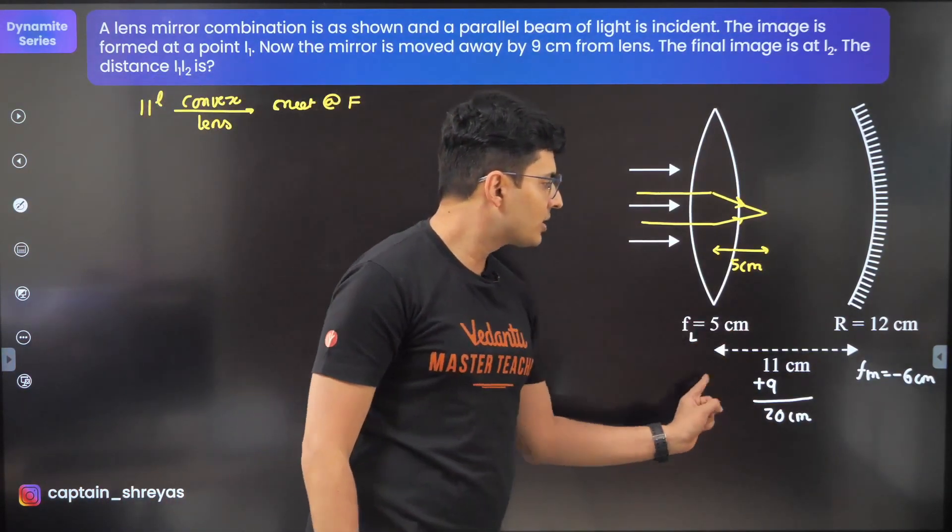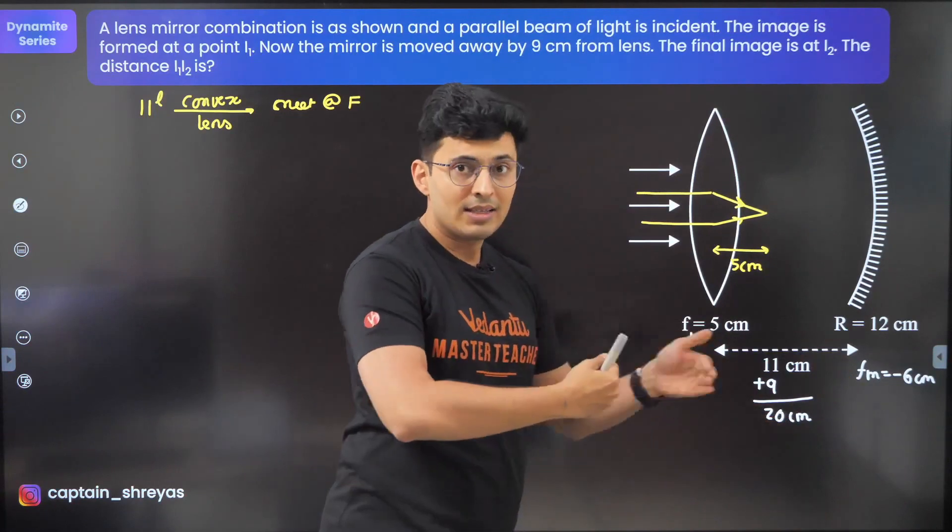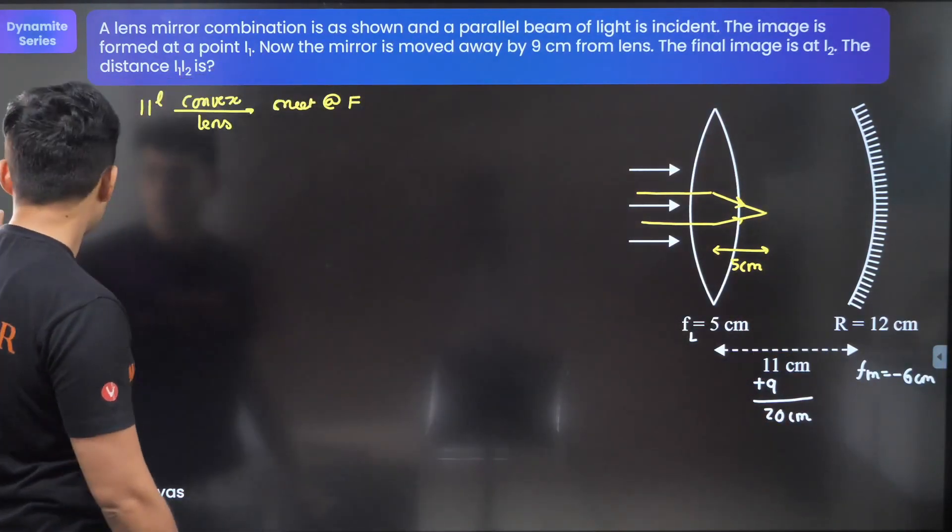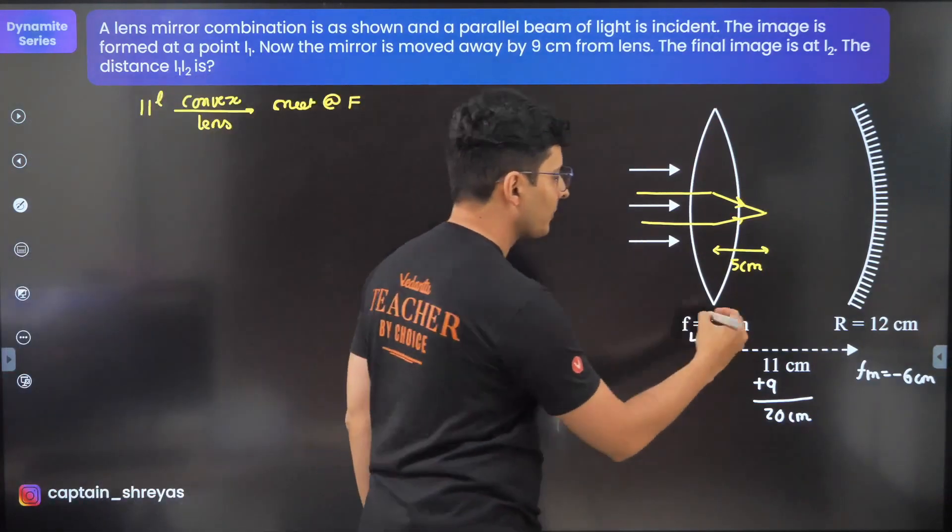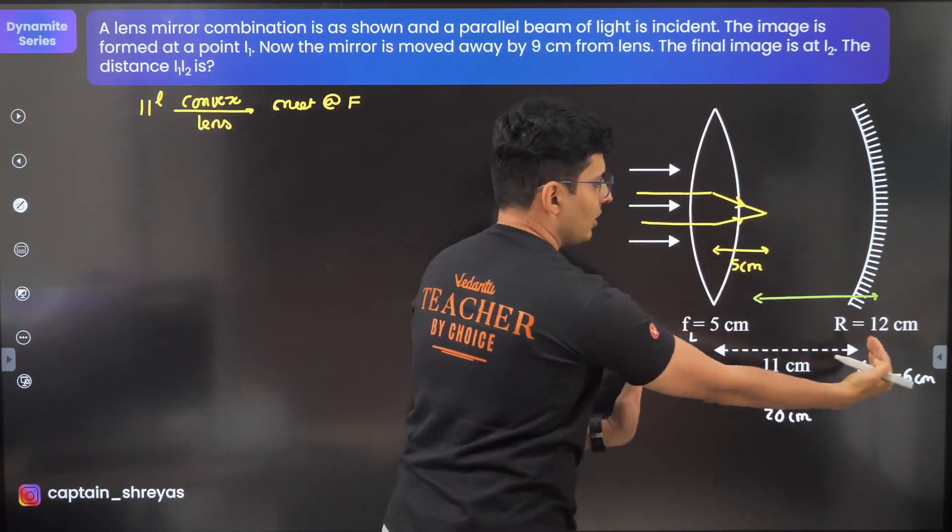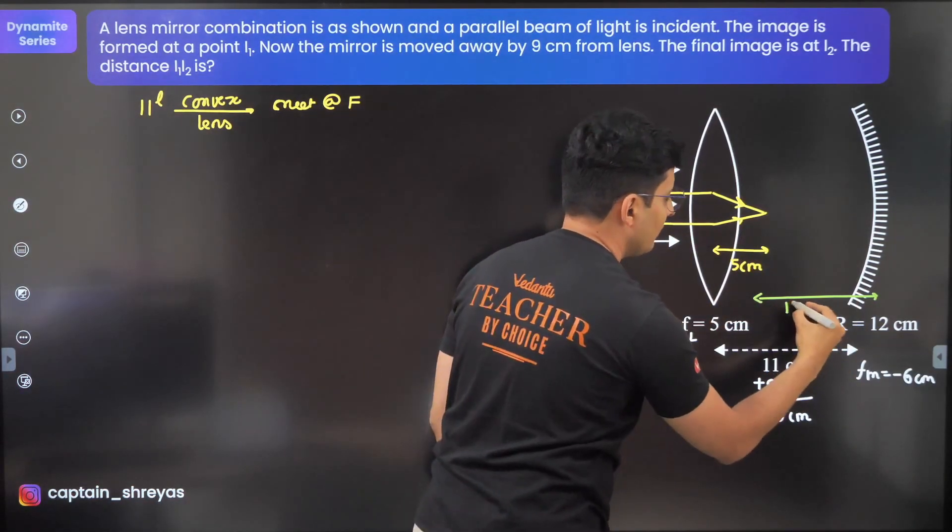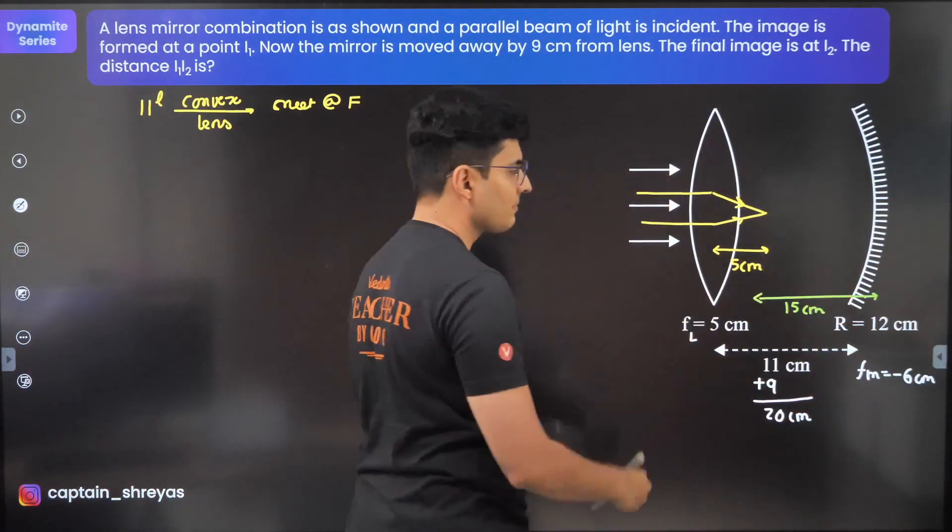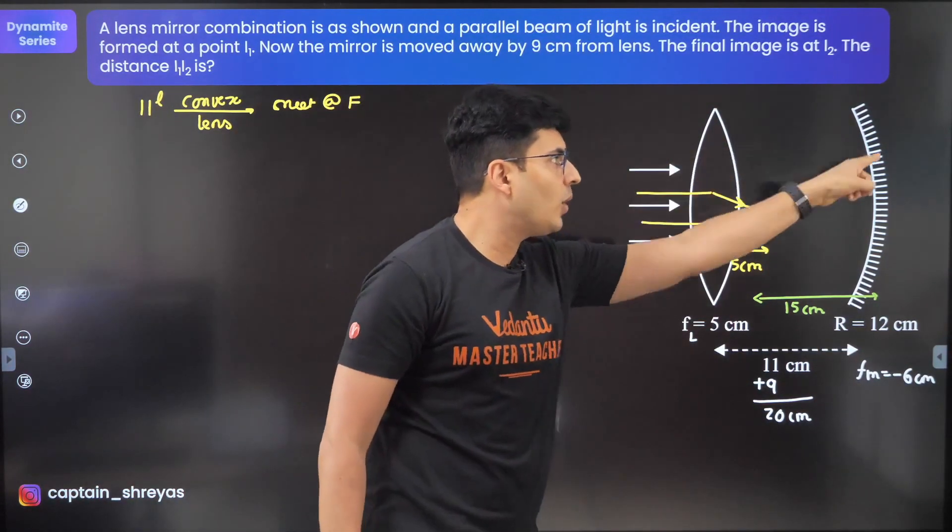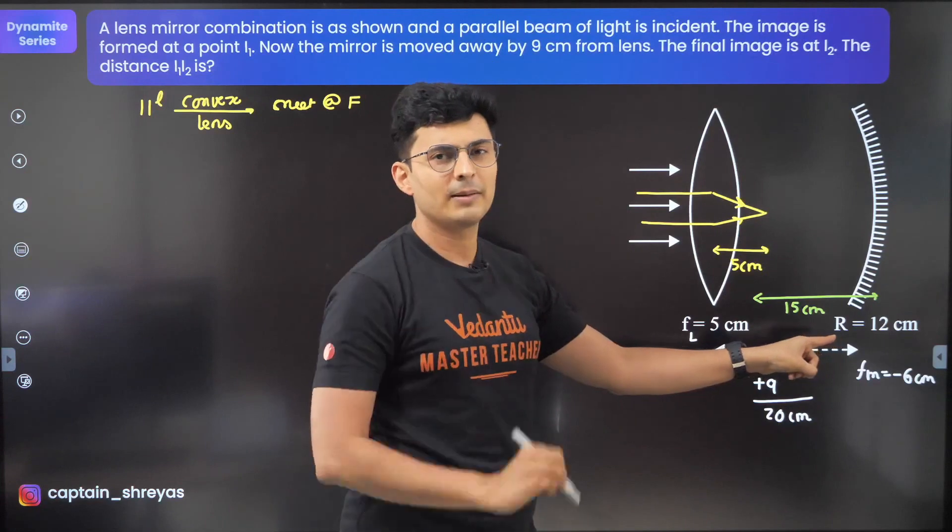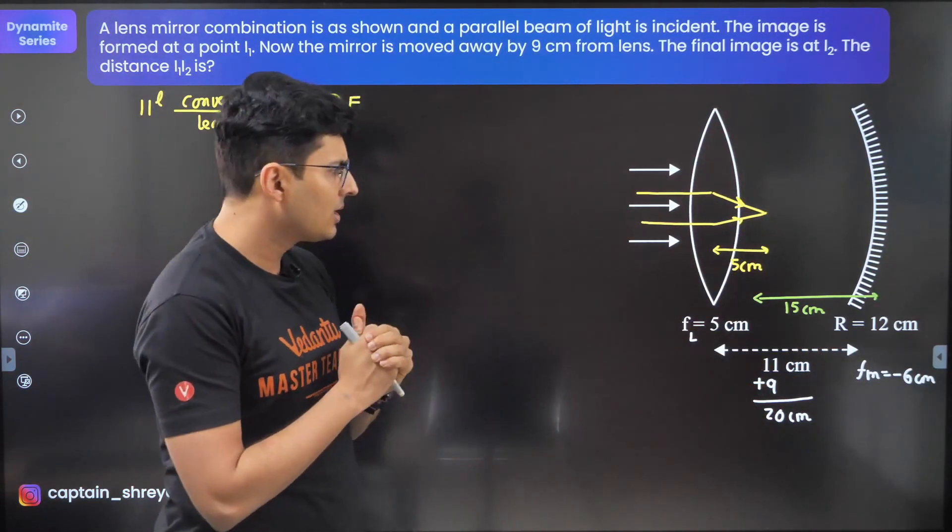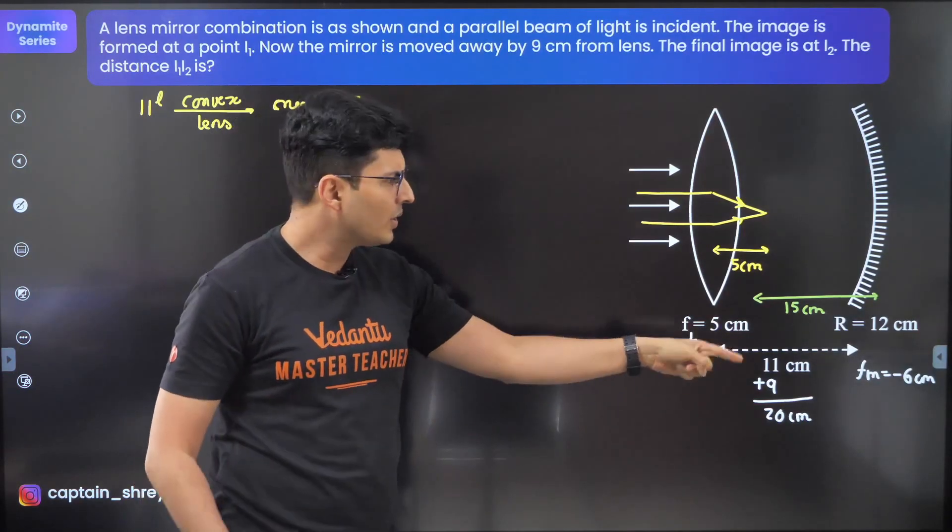Now let's see what happens next. This whole thing is 20 centimeters, remember you've increased it by 9 centimeters, total separation is 20. What's the remaining separation now? This was 20, this is 5, so 20 minus 5 is 15 centimeters. This is where the object will be for the concave mirror.